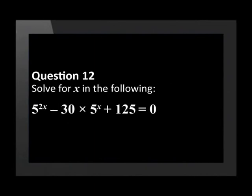Question 12. Solve for x in the following: 5 to the power of 2x, minus 30 times 5 to the power of negative 1, plus 1, times 0.